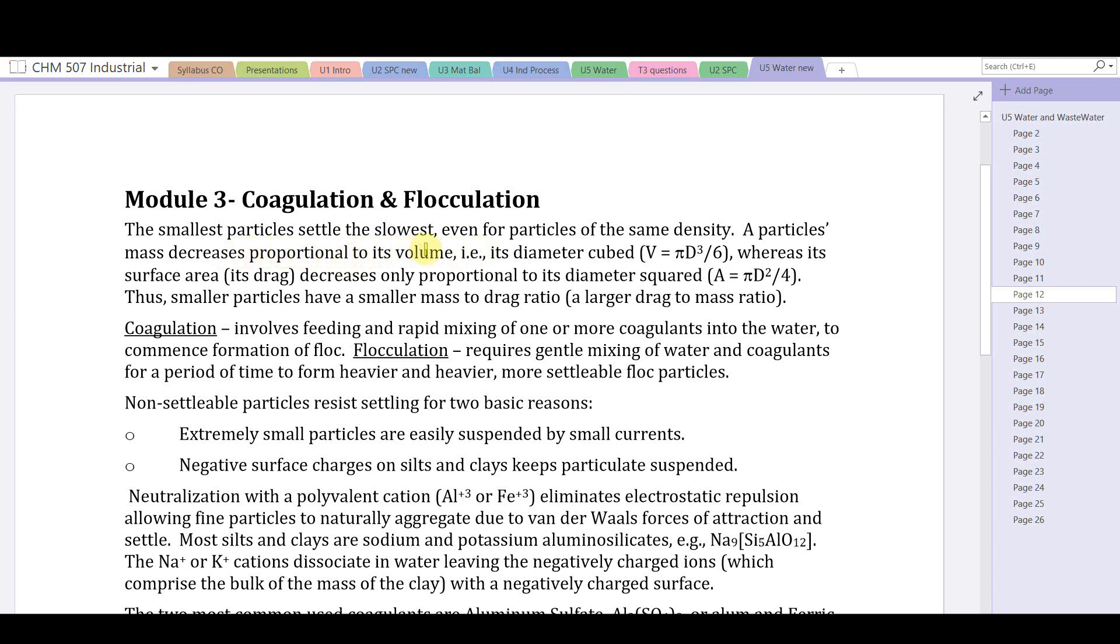A particle's mass decreases proportional to its volume, so mass is proportional to volume, and volume is proportional to diameter cubed because the volume of a sphere is πD³/6. If we compare a given particle with another particle whose diameter is two times smaller, then the volume of the second particle would be 2³ times smaller, or eight times smaller than the first particle.